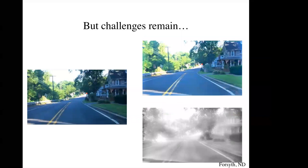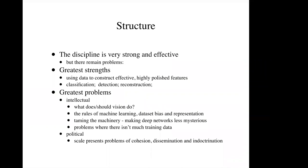So here's my structure. And looking at the time, I think I've hit 40 minutes pretty much dead on. So I will duck the political problems. The computer vision discipline is very strong and effective. We have great strengths at constructing features, particularly for classifying images, for detecting things in images, and for reconstructing the 3D world from images. And we have complex intellectual problems that still keep us awake at night. What should vision do? We constantly break the rules of machine learning and nothing bad happens except when it does happen. How do we sort that out? How do we tame the machinery so that it behaves in a reasonable engineering fashion? We want deep networks not to be mysterious artifacts. And how do we deal with problems where there isn't much training data? And I will stop and take questions, as that's what we do at this time, I believe.